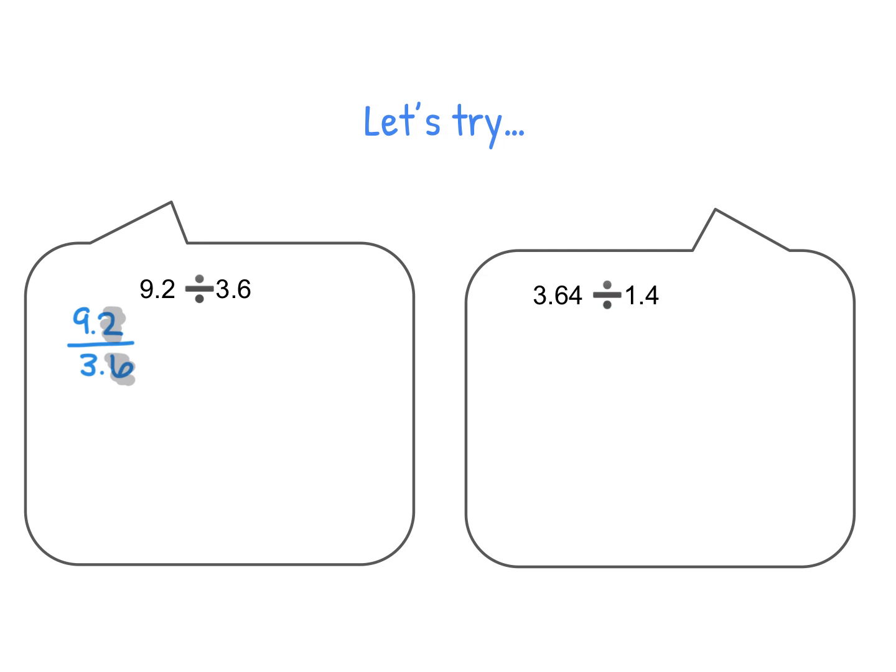The next thing we need to do is multiply by a giant one. So how many decimal places do we have? We have one decimal place, so that means we are going to multiply by a 10 over 10 as our giant one. You are doing this again to remove the decimal. After the multiplication, what you end up with is 92 over 36.